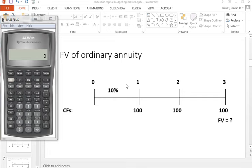In this video, we're going to calculate the future value of an ordinary annuity. In this case, we have three $100 payments, one at the end of each of three years.